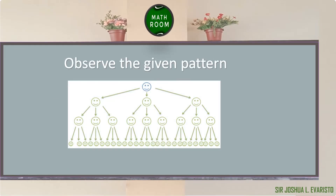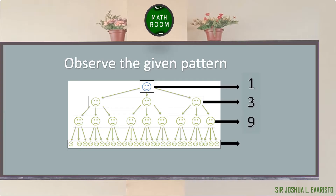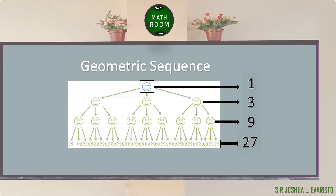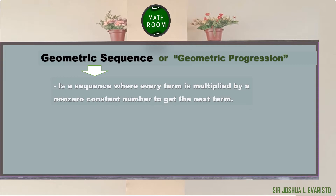Let us try to observe the given pattern. Imagine you have a secret — you tell three friends, who each tell three friends, who then tell another three friends. The numerical representation is 1, 3, 9, 27, and this is an example of a geometric sequence, also known as geometric progression. By definition, it is a sequence where every term is multiplied by a non-zero constant number to get the next term. This non-zero constant number is what we call the common ratio.